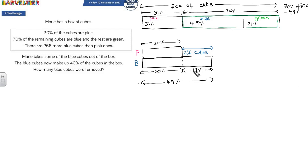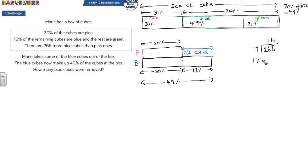This is where we've discovered something really important, because we can now work out a base unit. If 19% equals 266 cubes, we can work out how many cubes equals 1%. So if I do 266 divided by 19, that gives me 14. So 1% equals 14 cubes — that is really important information.